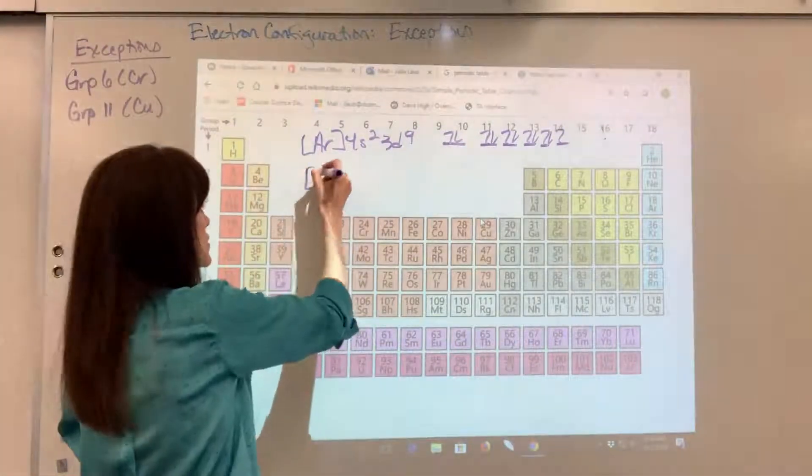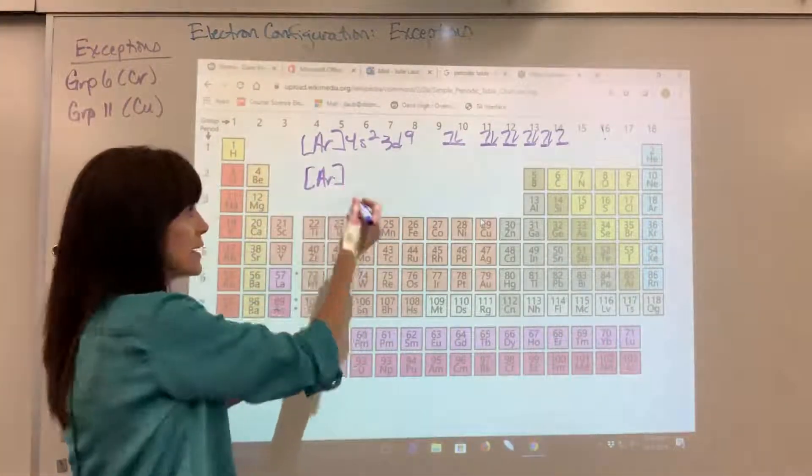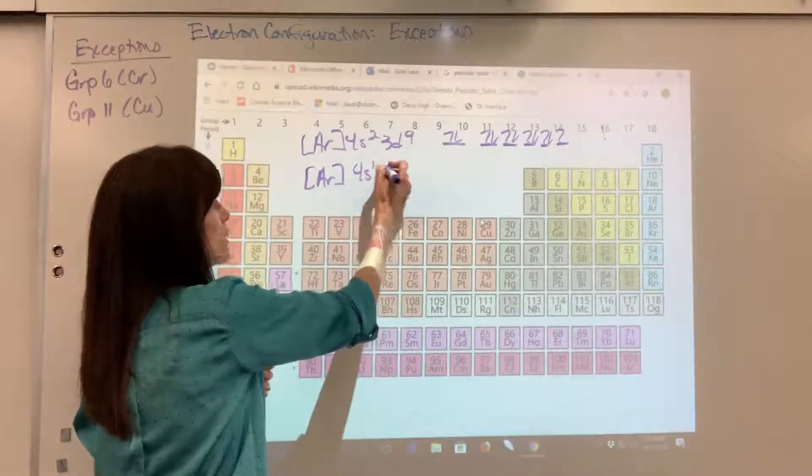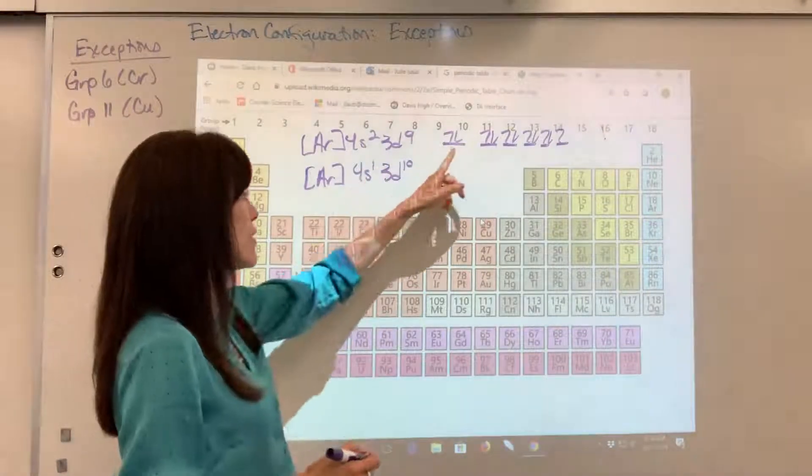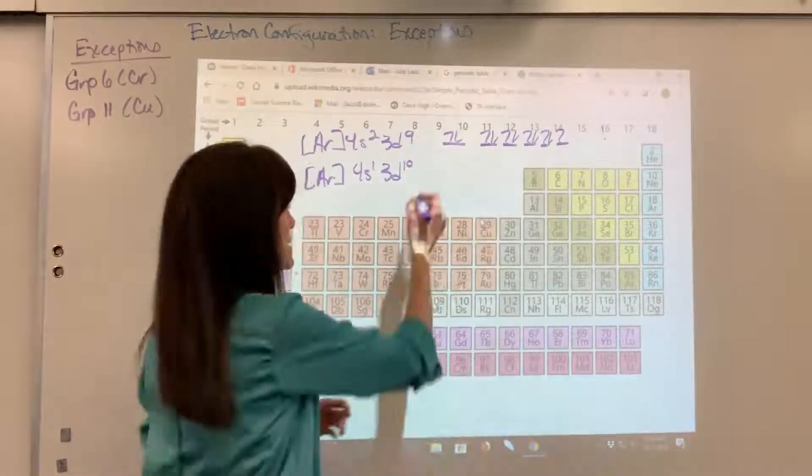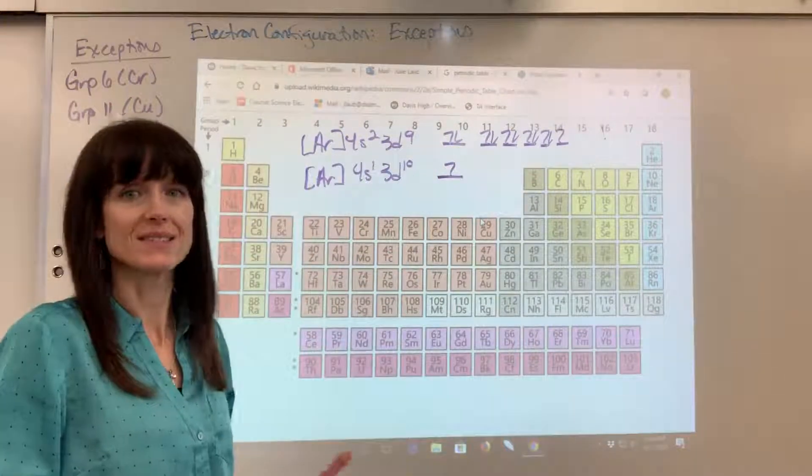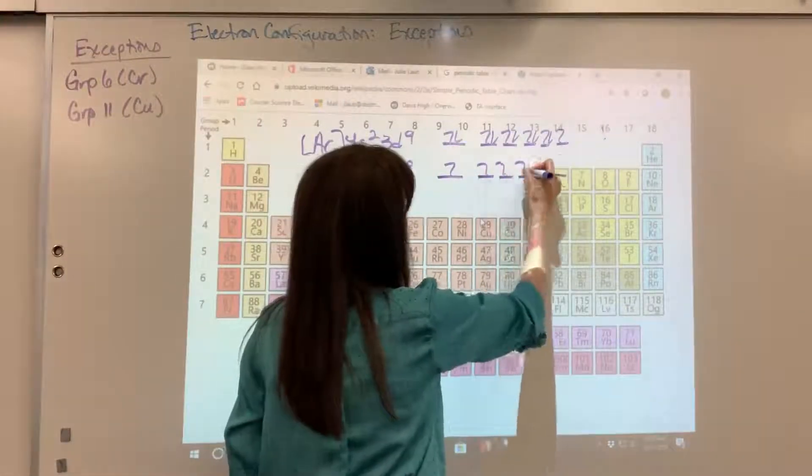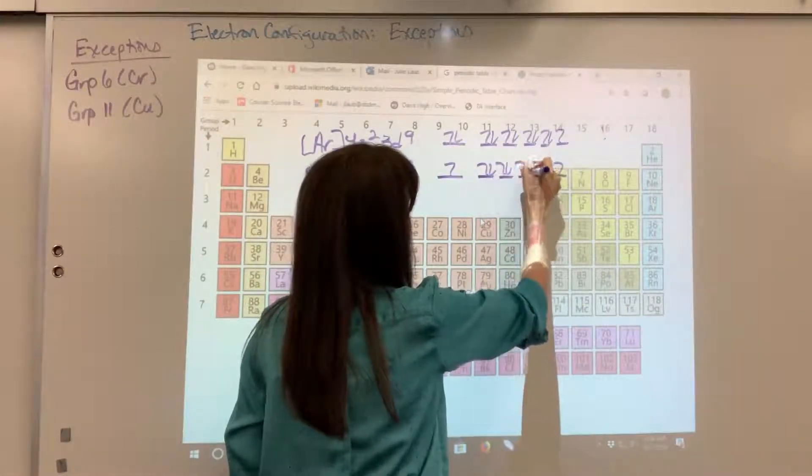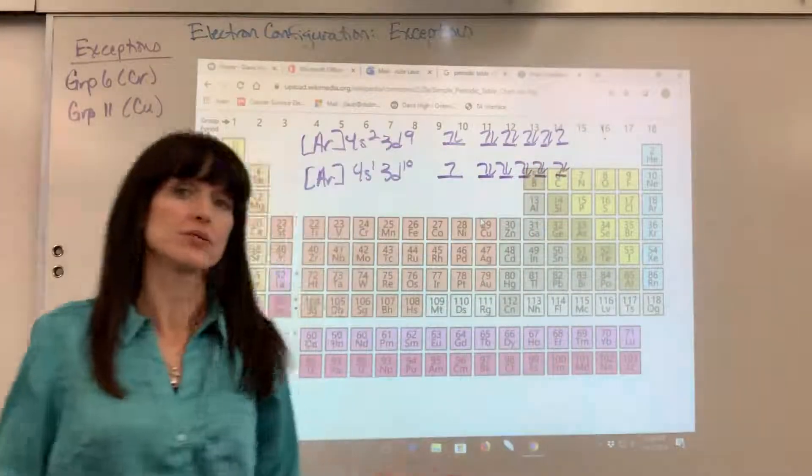Here's how it really exists in nature. And again, it's going to be our PES data that shows us this. 4S1, 3D10. An electron from the S moves into the D. So you end up with a half-filled S subshell and a full D subshell.